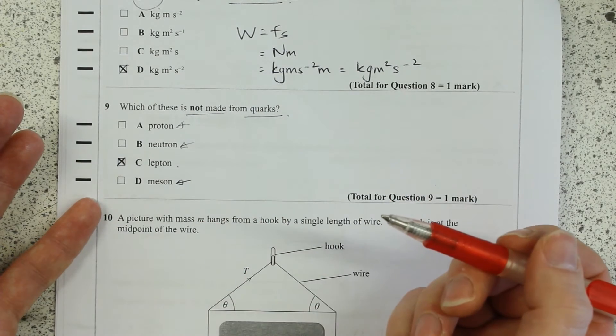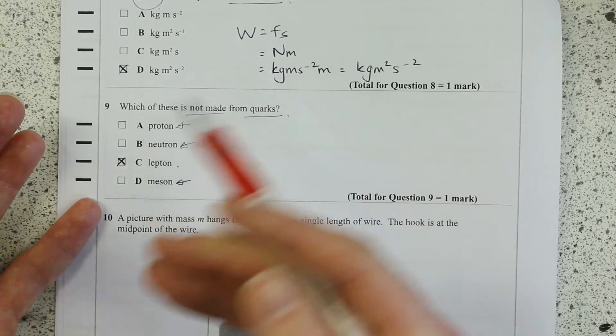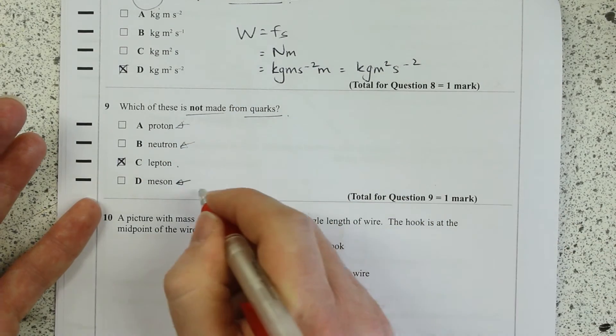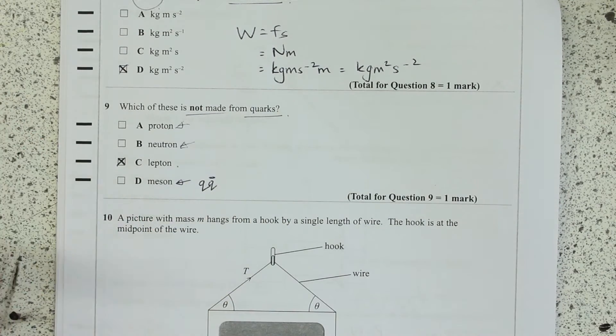It is a quark-antiquark pair: up, down. Okay, if you didn't get that, then you need to really look over that chapter again. Mesons are always quark-antiquark pairs.